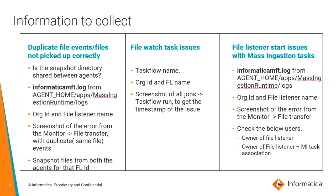For file watch task issues, we need the task flow name, org ID, and file listener name, along with a screenshot of the task flow run. This is for us to check the logs from the backend — in this case, the Informatica MFT log will not be helpful. The next one is file listener start issues with mass ingestion tasks — it would be the same as the task flow one, and the same set of details need to be collected. I will be showing all of this in the demo.